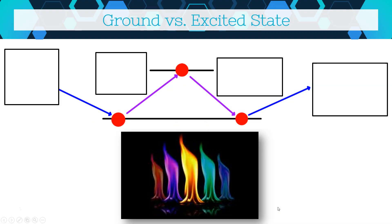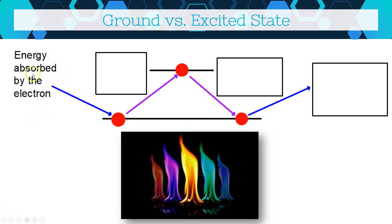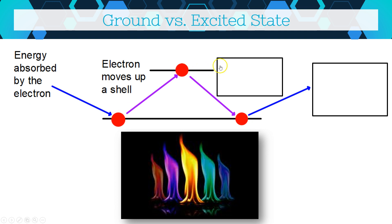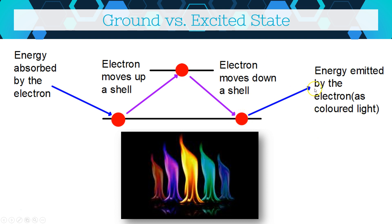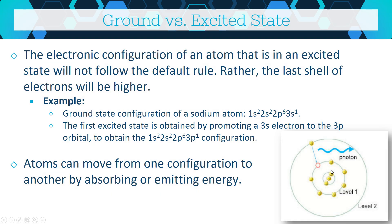In the diagram: red dots are electrons, black lines are energy levels. Energy is absorbed by the electron, which moves up a shell — but that's not stable — so the electron falls back down and that energy is emitted as coloured light, producing the coloured flames shown at the bottom.